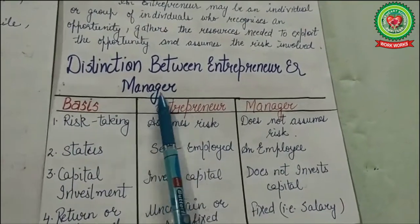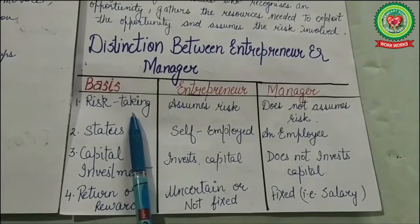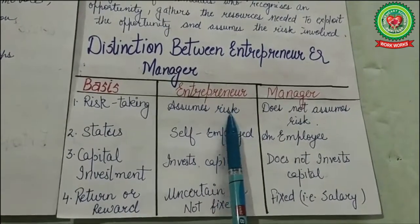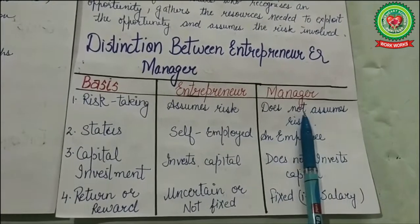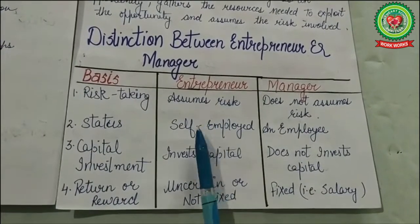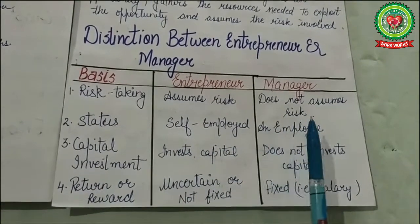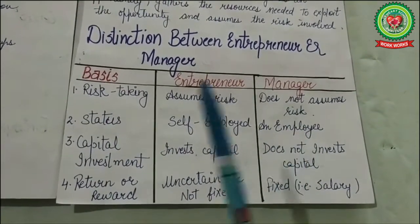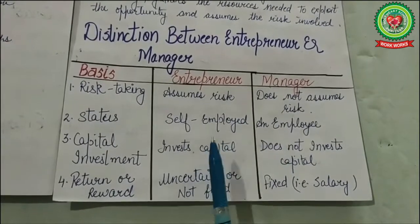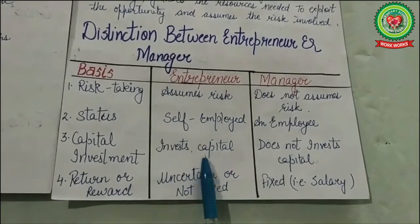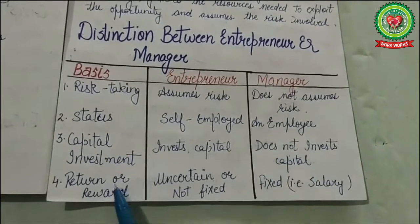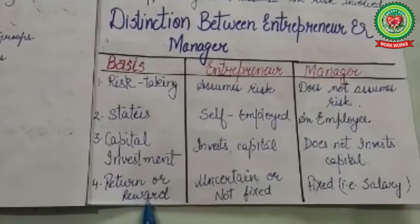The distinction between entrepreneur and manager: First, risk taking — an entrepreneur assumes risk because he is the owner of the business, whereas a manager does not assume any risk. Second, status — an entrepreneur is his own boss and is self-employed, but a manager is an employee of the business. Third, capital investment — an entrepreneur, as owner of the enterprise, invests capital in the business, but a manager does not invest any capital.